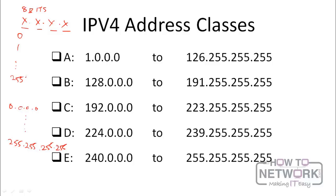These addresses are divided into different classes — classes A through E. Addresses starting with 0 are not used; class A starts from 1.0.0.0 and goes to 126.255.255.255. Class B addresses run from 128.0.0.0 to 191.255.255.255, and class C covers 192.0.0.0 to 223.255.255.255.